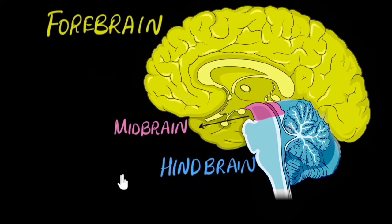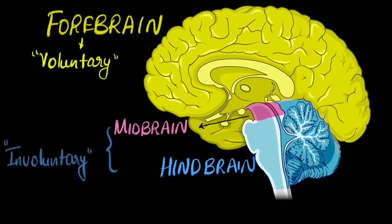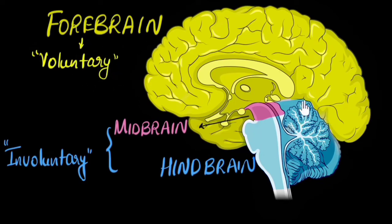So what are the functions of these parts? To get a broad sense, we can think that the forebrain is responsible for all the voluntary functions, and the midbrain and hindbrain together are responsible for all the involuntary functions. When I say voluntary, think about all the actions that you carry out consciously — like taking a walk, talking to someone, or deciding to watch this video. And when I say involuntary, those are functions happening in your body that you're not in control of — for example, your heart beating or your digestion.